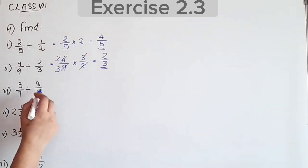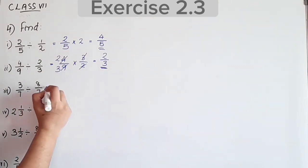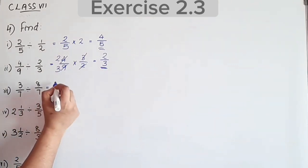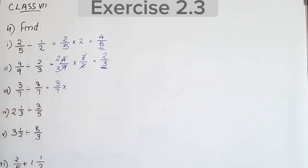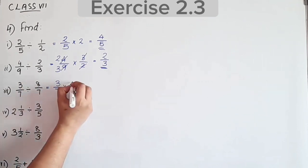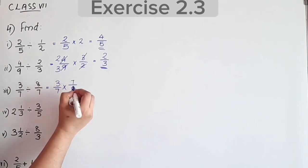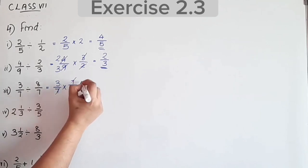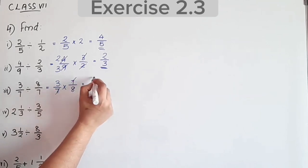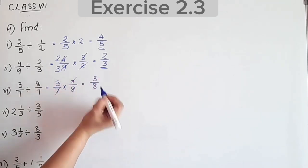Next question: 3/7 divided by 8/7. Take reciprocal of 8/7, which is 7/8. Then 3/7 into 7/8: the 7s cancel, giving 3 by 8.